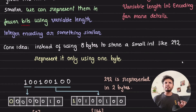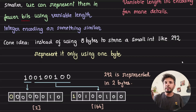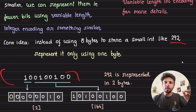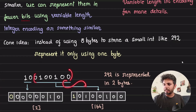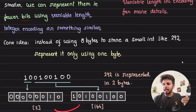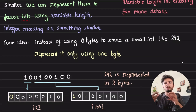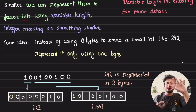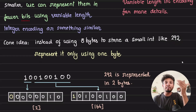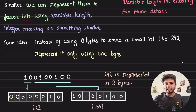One simple way to implement this: to represent the number 292, whose binary representation is 100100100, instead of storing it in 8 bytes, take 7 bits and store them in 1 byte, then mark the most significant bit as a continuation bit (1 = more bytes follow). Store the remaining 2 bits in a second byte and set its MSB to 0 (no more bytes). So 292 is stored in just 2 bytes instead of 4 or 8 — saving significant space.